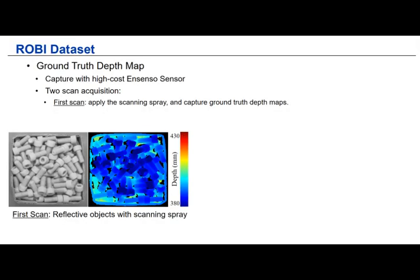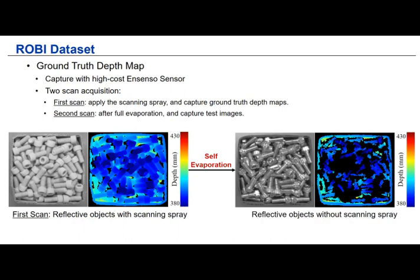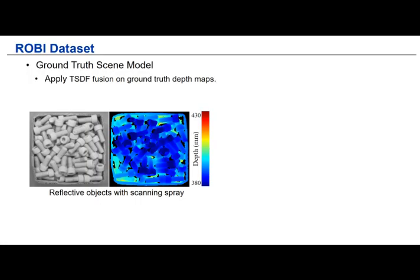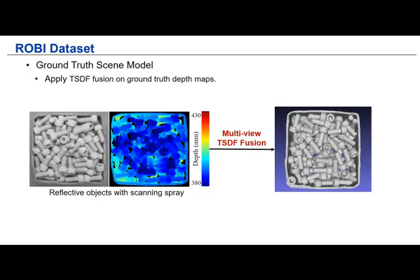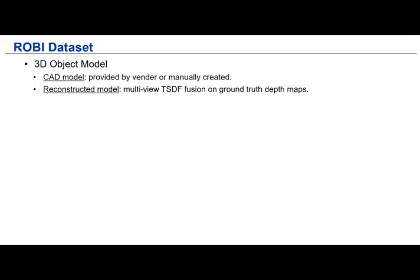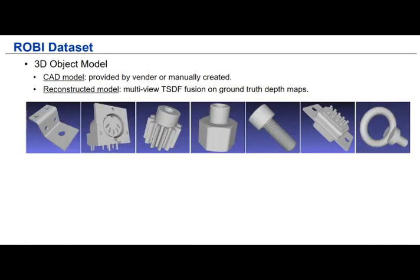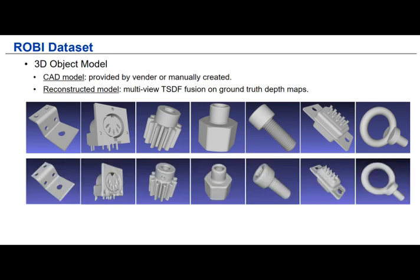Specifically, we capture the dataset with two scans. In the first scan, we apply the scanning spray on the objects and capture the ground truth depth maps. In the second scan, we wait for the self-evaporation of the scanning spray and capture the raw data. Here we can see how good the depth data is for objects with scanning spray. To label the ground truth 6D object poses, we also apply multi-view depth fusion on the ground truth depth maps, and the quality of the reconstructed mesh is quite good for ground truth labeling. For each object, we provide two types of object models: the vendor-provided or manually created CAD model, and the multi-view reconstructed model. The reconstructed model is created by using the scanning spray and applying multi-view depth fusion.